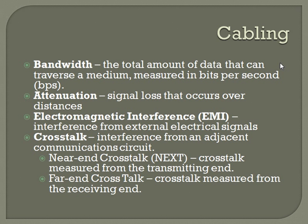Cabling standards — a couple of terms to get familiar with. Bandwidth is the amount of data that can traverse a medium, generally measured in bits per second (bps). Don't confuse bits with bytes — eight bits go to a byte. In the networking world we measure everything in bps. Attenuation is signal loss that occurs over distance. For DSL, attenuations above 60 dB usually cause problems. Electromagnetic interference (EMI) is interference from electrical devices outside of what you're working with, and can be internal or external.